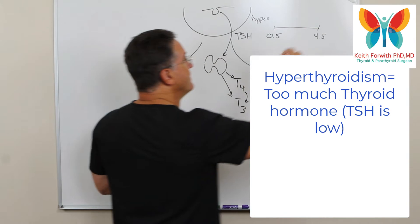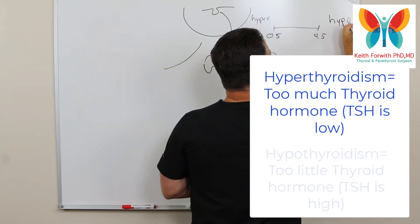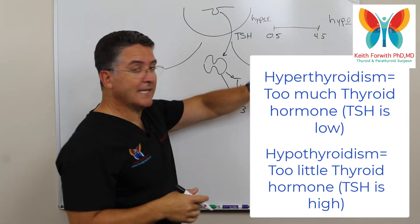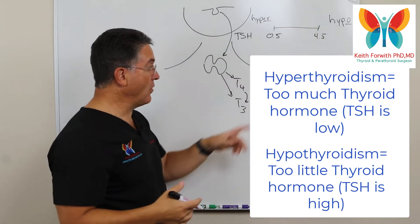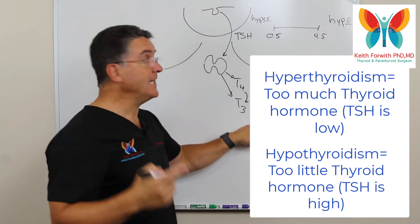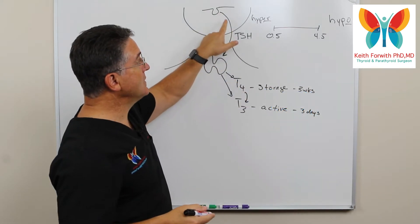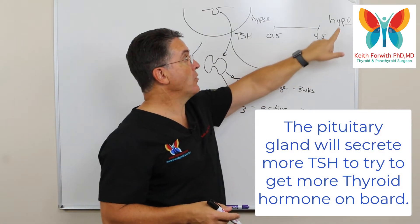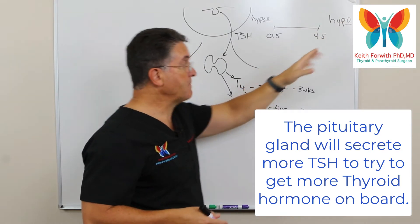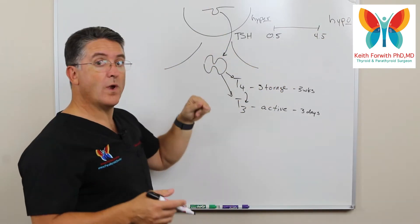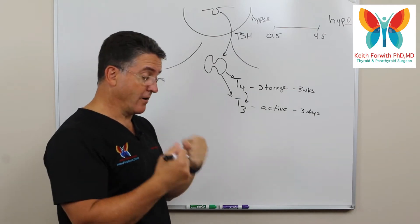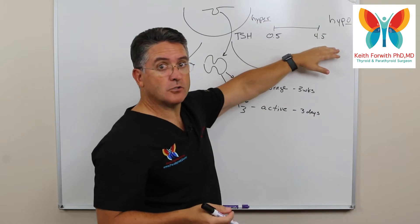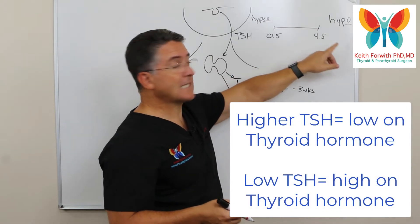On the other end we find the opposite status: hypo. Hypo means low, and hypothyroid means that there's not enough thyroid hormone floating around in your system. The brain's response is that the pituitary gland will secrete more and more thyroid stimulating hormone in order to try to get more thyroid hormone on board. So when the body says we need more thyroid hormone, it makes more TSH — and even though it's a higher number, higher TSH means you're low on thyroid.